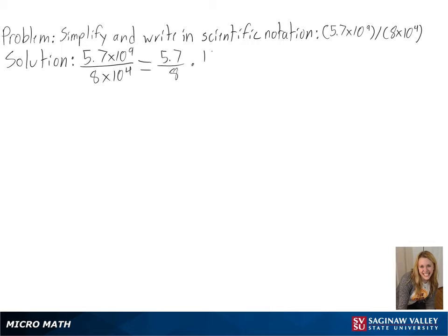Another way of writing 10 to the 9th is 10 to the 5th times 10 to the 4th, and that way we are able to simplify 10 to the 4th over 10 to the 4th.